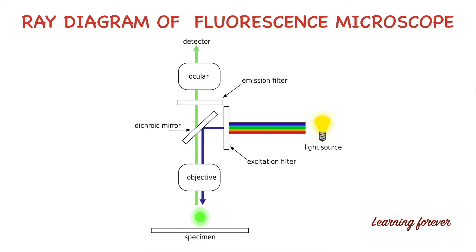Now let's see how the fluorescence microscope works. First, the biological sample or microorganism is mixed with fluorescence dye. After mixing, the sample is placed on the stage of the microscope. Light is then illuminated by the light source, consisting of multiple colors. The excitation filter, kept between the light source and the dichromic mirror, blocks all other colors and transmits only blue light. This blue light is then reflected towards the sample by the dichromic mirror.